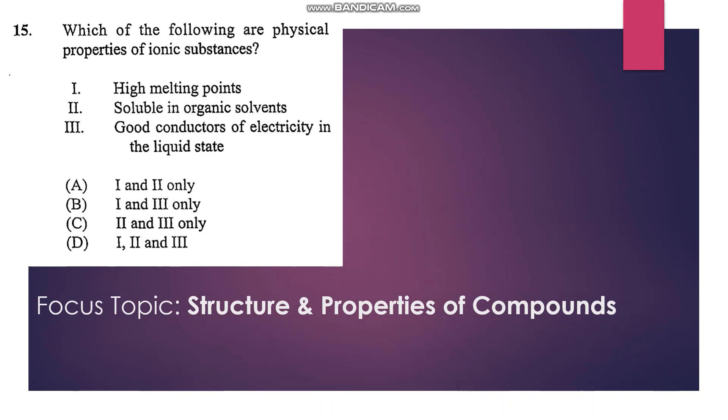Number 15: which of the following are physical properties of ionic substances? We know that ionic substances have high melting and boiling points and are good electrical conductors when molten. So 1 and 3, that's B.